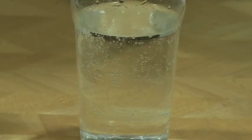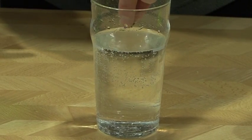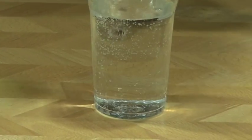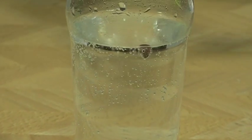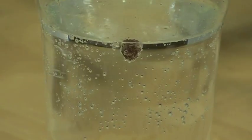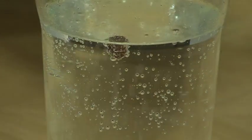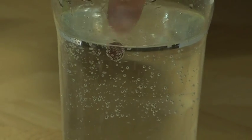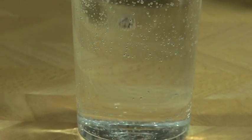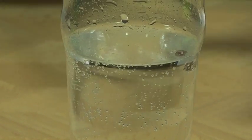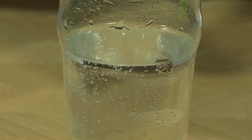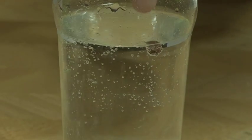But what happens if we put a sultana in there? You'll see it sinks to the bottom and immediately rises back up to the top as the bubbles form around that sultana. Now if I knock off some of those bubbles, you'll see it sinks a little bit, forms more bubbles on it and rises up to the top where the bubbles burst and the pressure decreases.